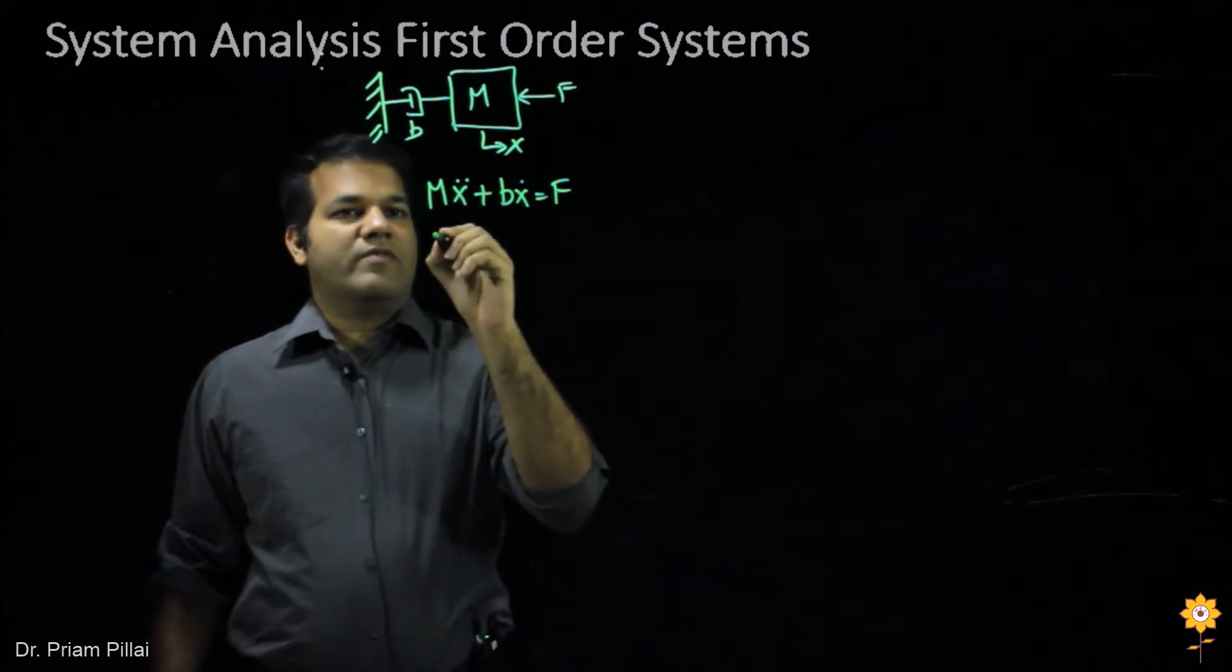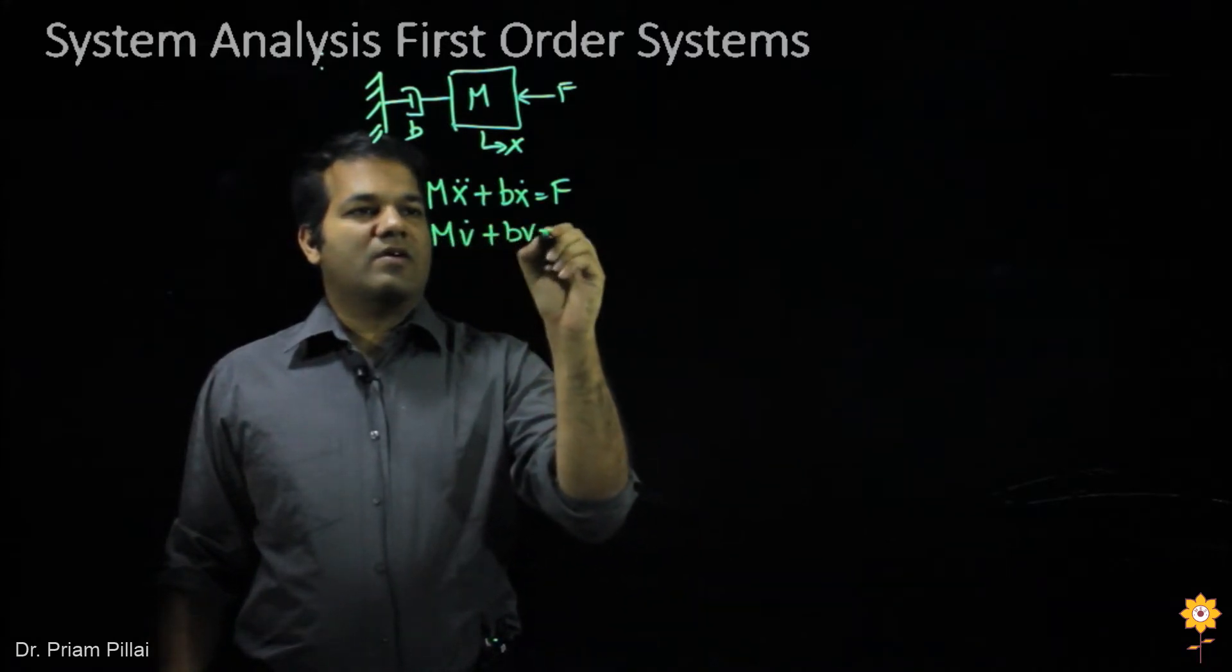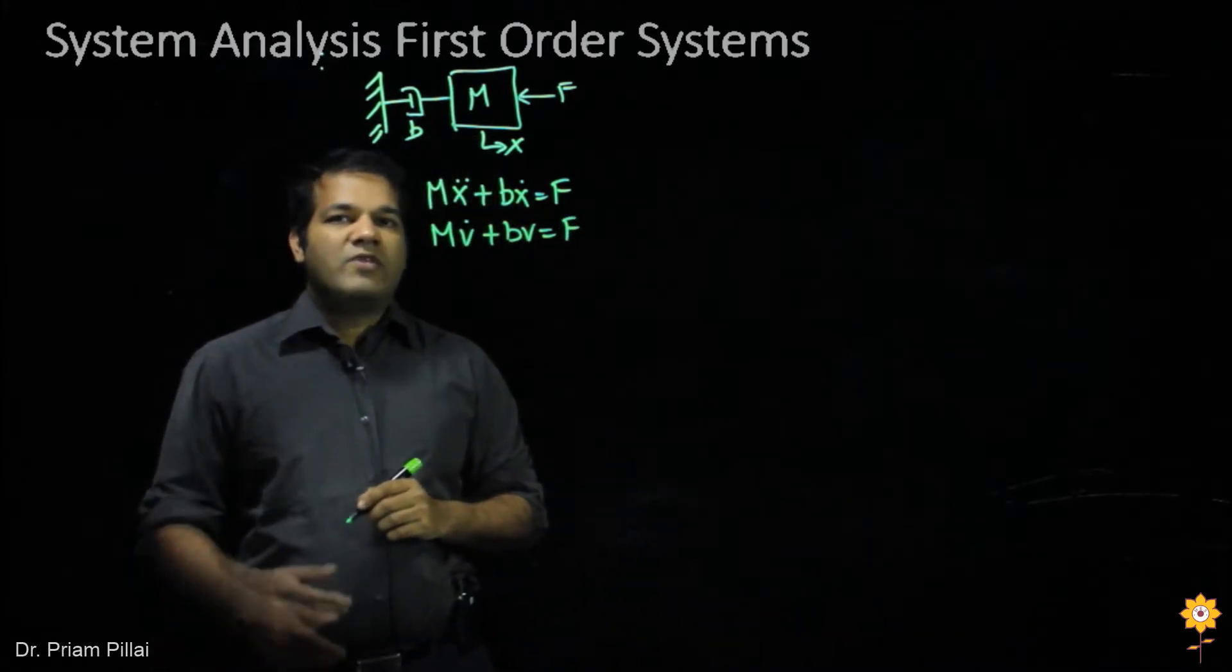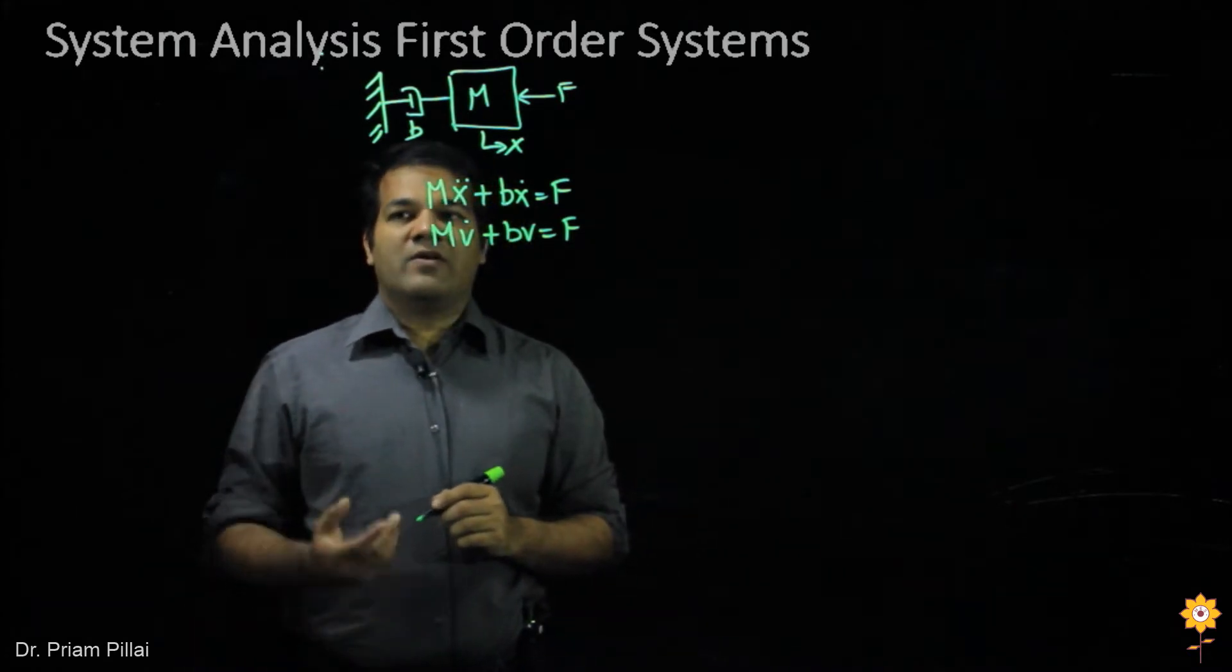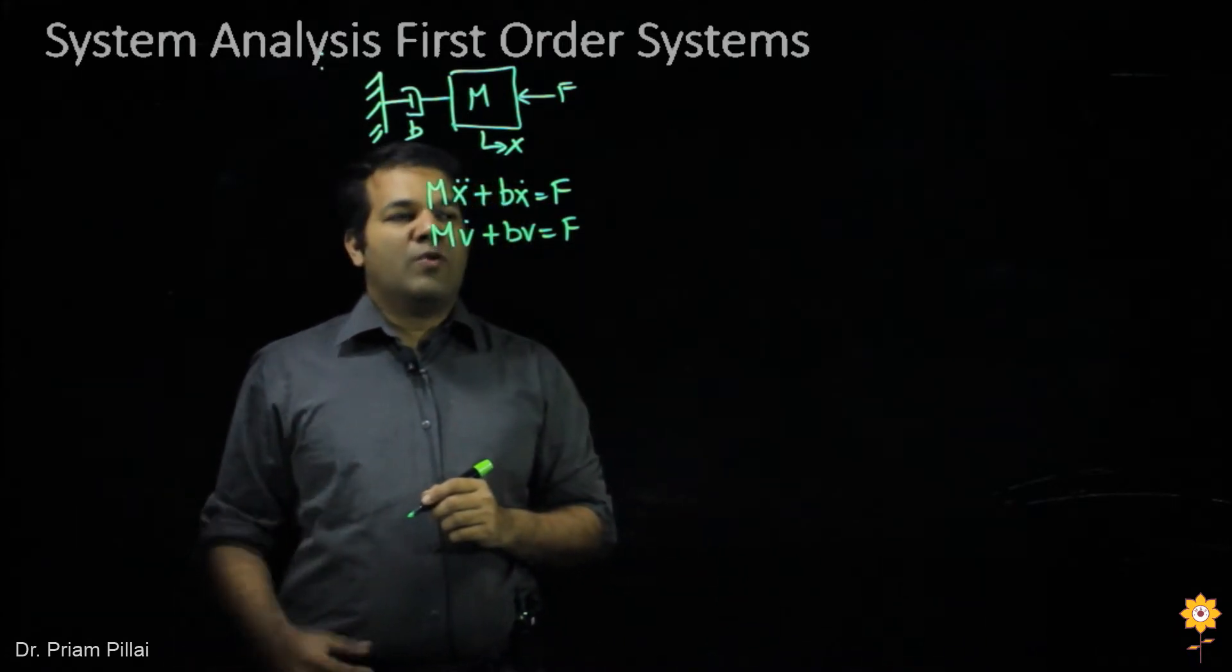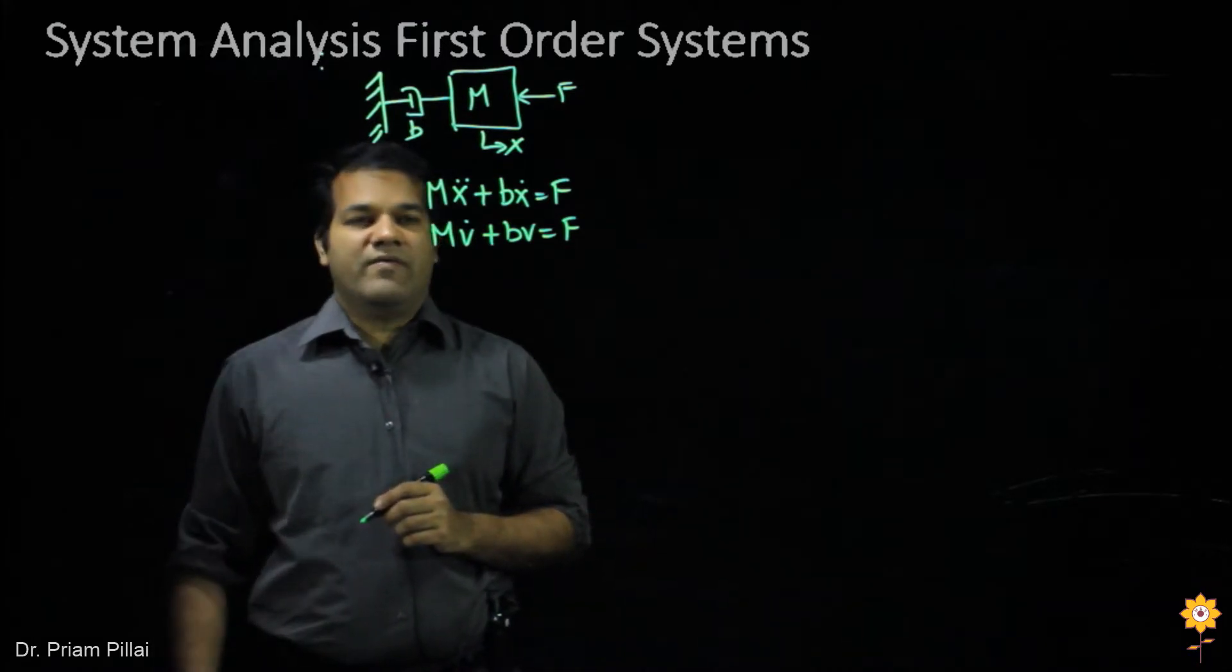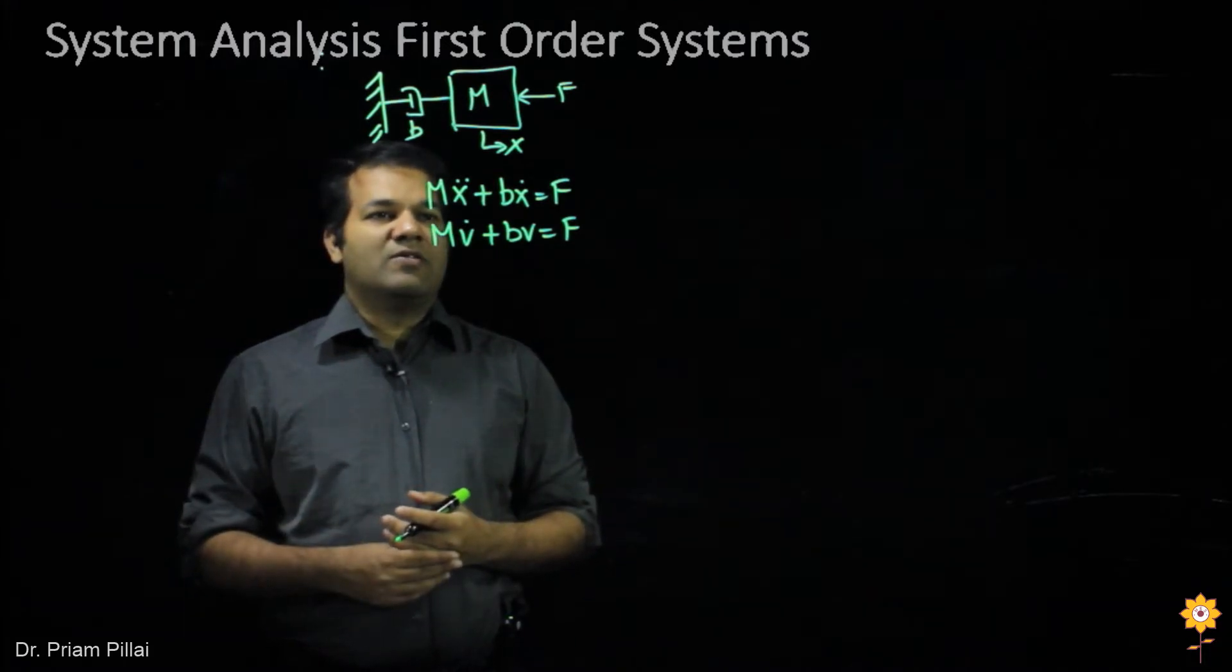Or in terms of the velocity, we would get Mv dot plus Bv equals F. As I've seen before, this would also correspond to an equation of a circuit with a resistor and a capacitor. So knowing how to solve this will give us some insight into how a system like this would behave.